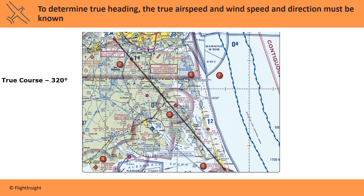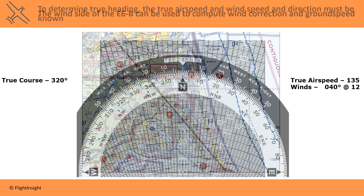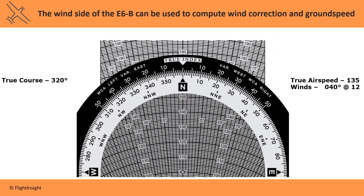Now we have to take account of the wind, which will require us to adjust our heading to the left or right to maintain course, and which will change our ground speed. We need to know our true airspeed and the wind direction and velocity. Let's say we're flying at 135 knots in winds out of 040 degrees blowing 12 knots. We'll use our E6B to determine wind correction and ground speed.